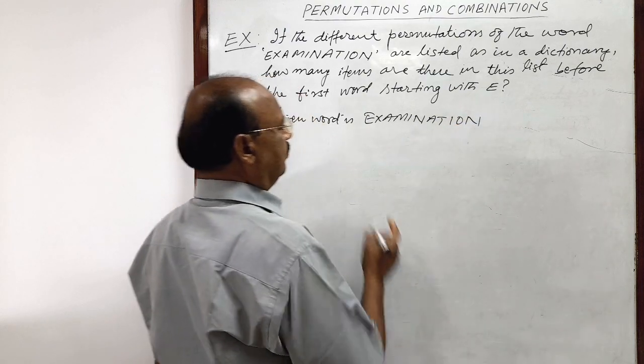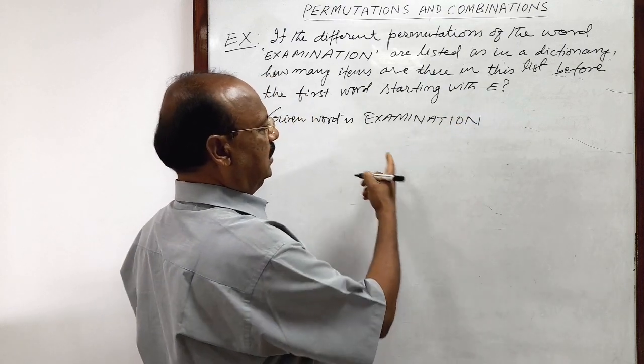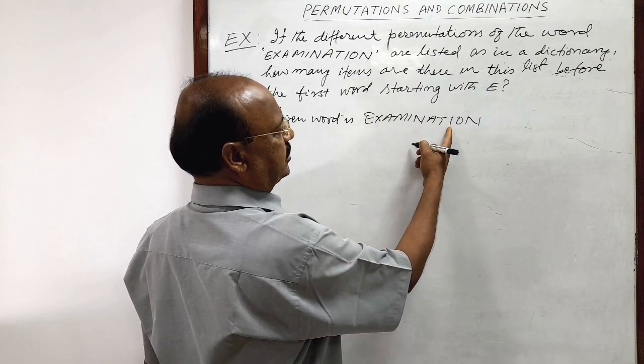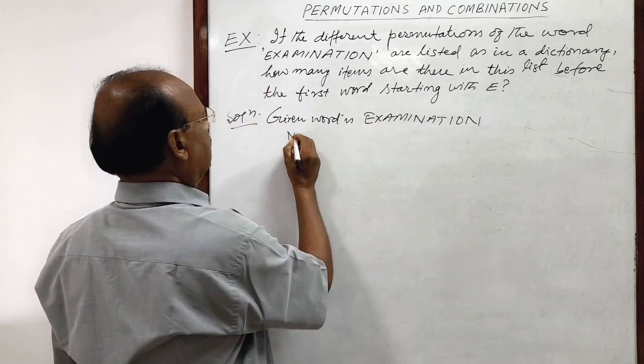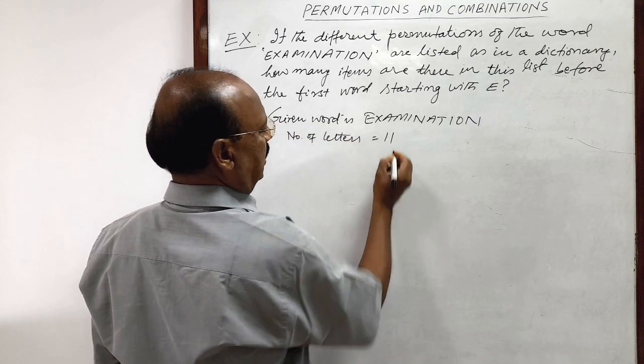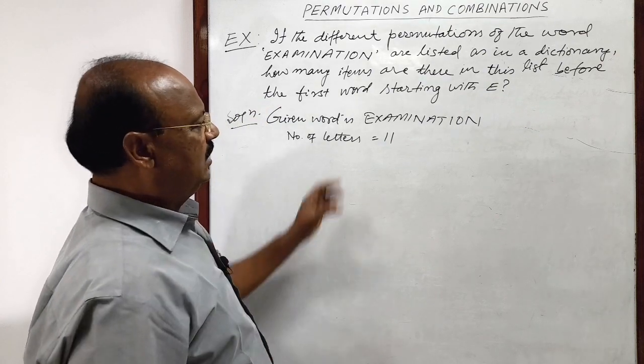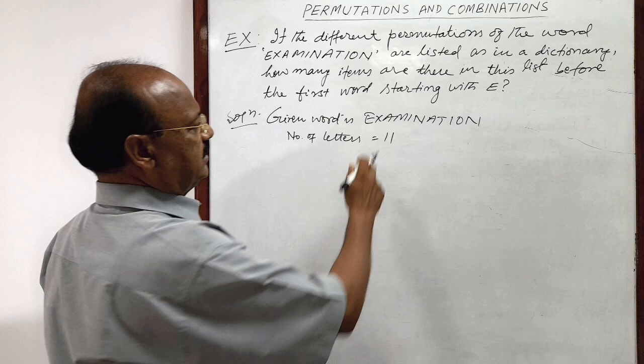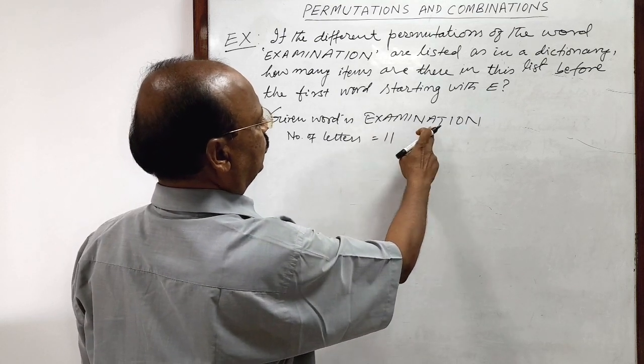Here total number of letters is 11: 1, 2, 3, 4, 5, 6, 7, 8, 9, 10, 11. Okay, here number of letters is 11, but some of the letters are having repetitions. As for example, we are having two A's.